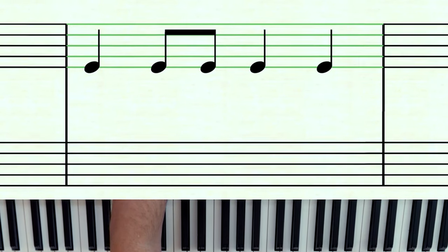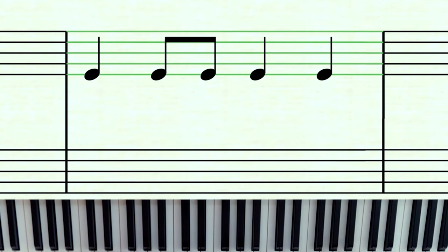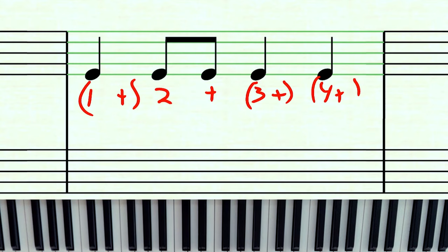If you have a measure with both quarter notes and eighth notes, you should continue to count the quarter notes as 'one and' along with the eighth notes to maintain consistency. Even when counting quarter notes, you're still saying 'one and, two and, three and, four and' — you're just holding over the quarter notes for the right amount of beats. This is called subdivision, and the more subdivision you do, the easier it is to stay in time.